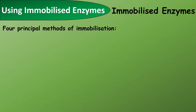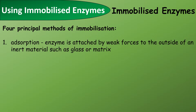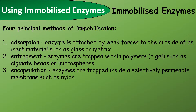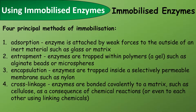The four principal methods of immobilizing enzymes are: absorption, where an enzyme is attached by weak forces to the outside of an inert material such as glass or a matrix; entrapment, where enzymes are trapped within polymers such as a gel or an alginate bead; encapsulation, where the enzymes are trapped inside a selectively permeable membrane such as nylon; and cross-linkage, where the enzymes are bonded covalently to a matrix such as cellulose as a consequence of chemical reactions that hold them in place.